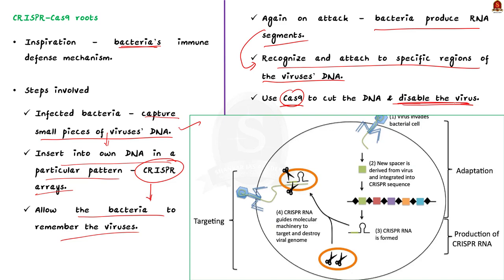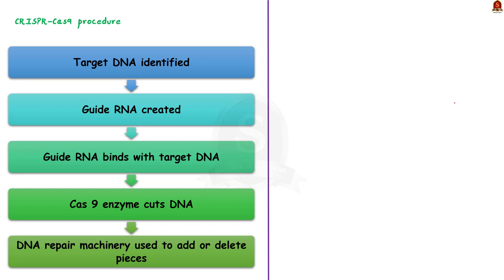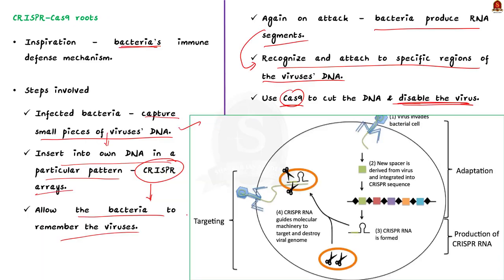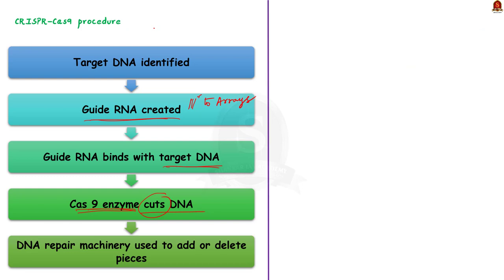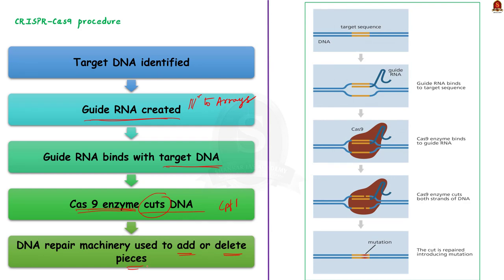The procedure in CRISPR-Cas9 technology: first, a small piece of RNA is created for guidance, similar to RNA segments bacteria produce from CRISPR arrays. When introduced into cells, the guide RNA recognizes the intended DNA sequence, attaches itself to a specific target in the cell's DNA and to the Cas9 enzyme, which then cuts the DNA at the targeted location. Note that apart from Cas9, other enzymes like CPF1 can also be used. Once the DNA is cut, researchers use the cells' own DNA repair machinery to add or delete pieces of genetic material.